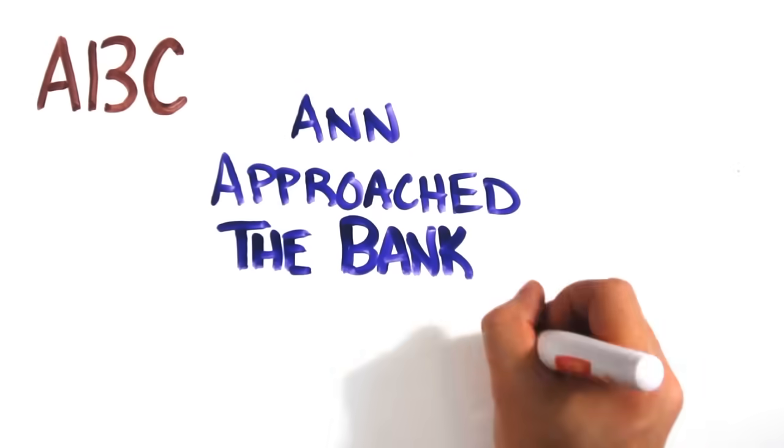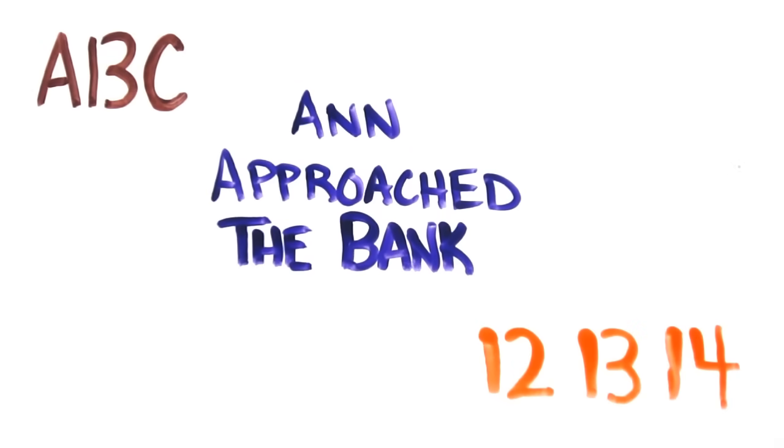In a similar way, System 1 generates context without you knowing. Reading each of the following may seem fairly simple: A, B, C, Anne approached the bank, and 12, 13, 14.